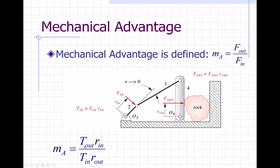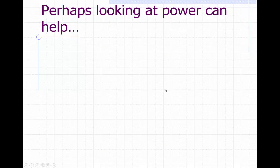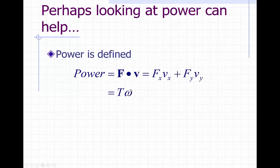However, up to this point we haven't really talked about torques in terms of linkages. What we have talked about are angular velocities. So it would be great if we could modify this mechanical advantage a little bit more such that it includes some function of angular velocity input — our crank angular velocity — and our output angular velocity, which we call omega 4 in terms of our rocker. Perhaps if we look at power, this will help. Power is defined as the force dotted with the velocity, and we know instead of force and velocity, we could use torques and angular velocities. But we need to convert these torques and angular velocities to inputs and outputs.